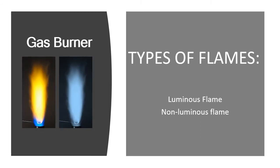The types of flame we have learned are the luminous and the non-luminous flame. When lighting a gas burner, make sure to close the air hole to have a safety flame, which is the luminous flame — yellow to orange. Then open the air hole to produce a non-luminous flame, which is color blue. This is best used for heating.